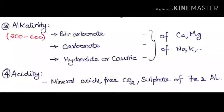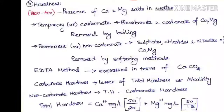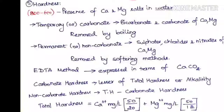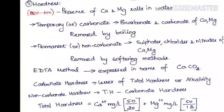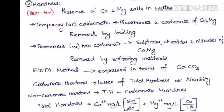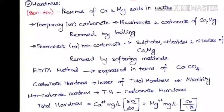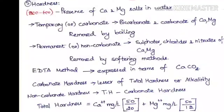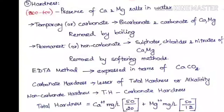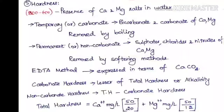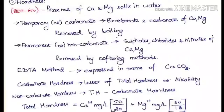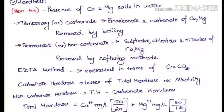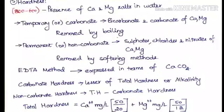The next property is hardness. The hardness limit per IS code is 200 (desirable) and 600 (permissible). Hardness comes from calcium and magnesium salts. There are two types: temporary hardness, also called carbonate hardness, caused by bicarbonates and carbonates of calcium and magnesium — this can be removed simply by boiling. Permanent or non-carbonate hardness is due to sulfates, chlorides, and nitrates of calcium and magnesium salts — this can only be removed by softening methods, not by boiling.